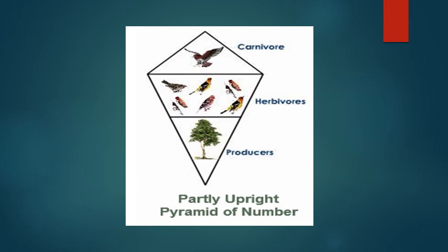The second type is the partly upright pyramid of number. This type of pyramid is seen in the forest ecosystem. Here the number of producers are lesser in number and support a greater number of herbivores. For example, a tree in a forest is host for a number of insects. These herbivores — the insects — in turn support a fewer number of carnivores like woodpecker. This gives it a spindle shape and is called partly upright pyramid of number.